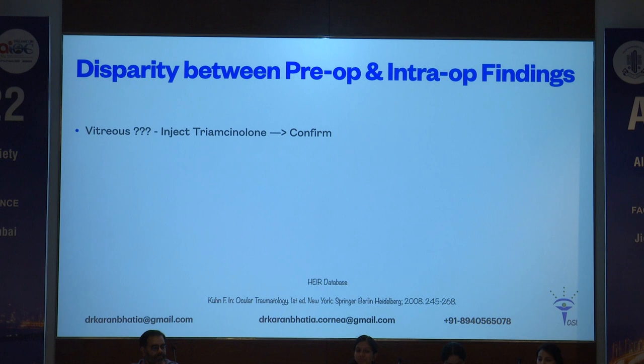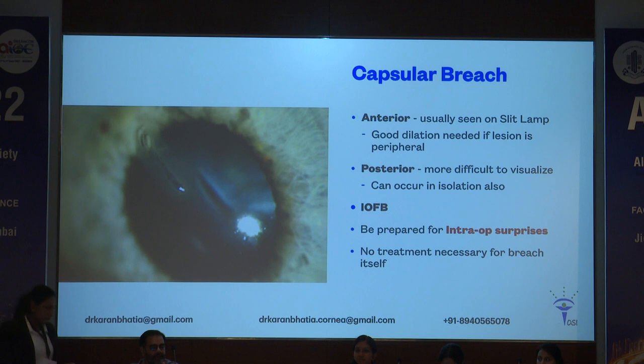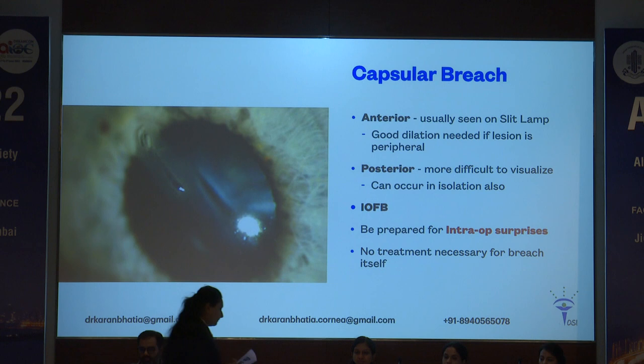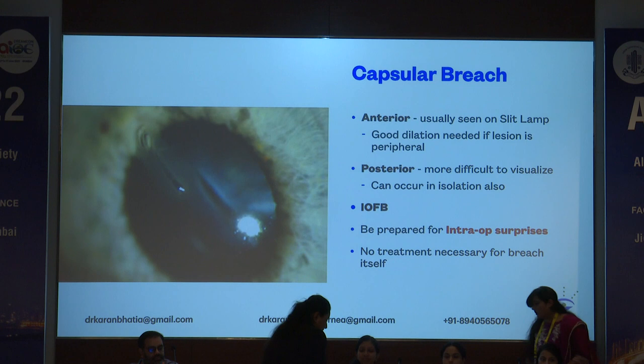Capsular breach — anterior — you can usually see it on the slit lamp. Good dilation is required if the lesion is peripheral, and for posterior lesions it can be difficult to visualize and it can occur in isolation as well. Presence of an IOFB should always be looked out for and be prepared for intraoperative surprises. No treatment is necessary for the breach itself.